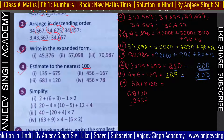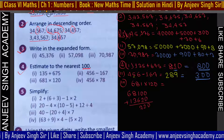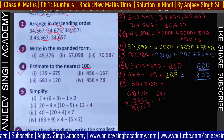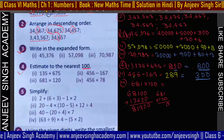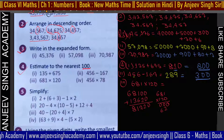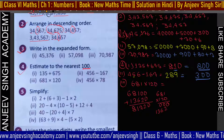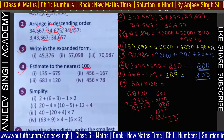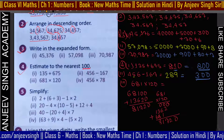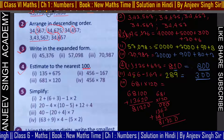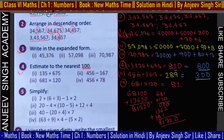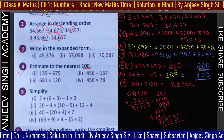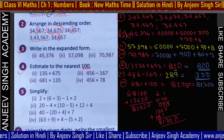20 times में 68,100। इसको add करो: 81,720 आ गया। Check करना चाहो तो: 681 × 120 — 0 आ जाएगा, 2×8 = 16 carry 1, 2×6 = 12 plus 1 = 13, फिर 1, 8, 6 — sum करो: 81,720। अब इसको 100 पर round up करना है — 2 देखो, 2 < 5 तो 81,700 हो जाएगा।